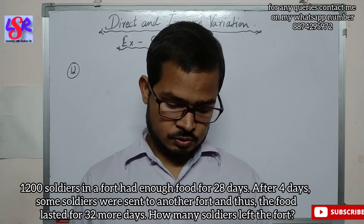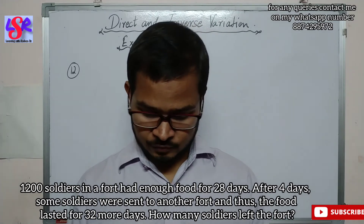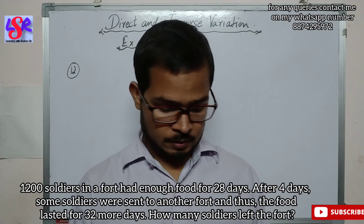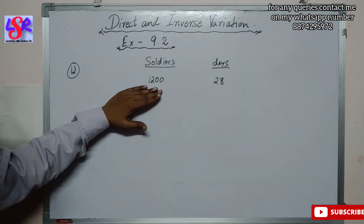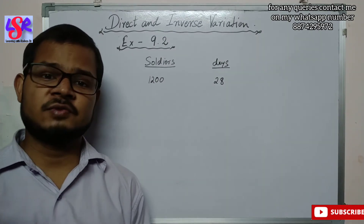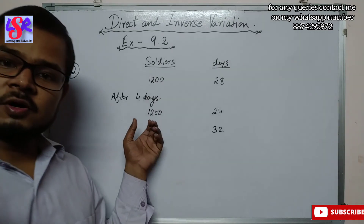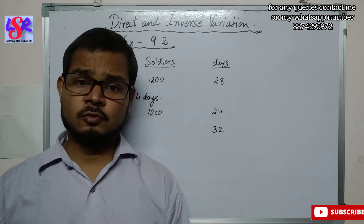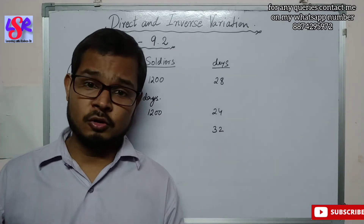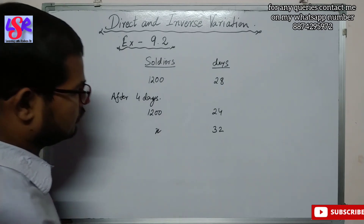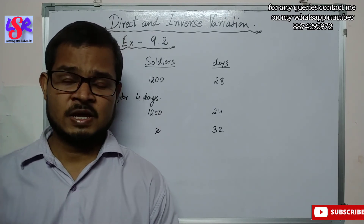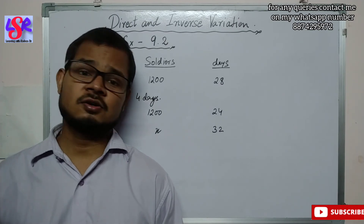Now question number 12: 1200 soldiers in a fort have enough food for 28 days. After four days, some soldiers were sent to another fort, and the food lasted for 32 more days. Find the number of soldiers left in the fort. After 4 days, if all 1200 soldiers remained, the food would last 24 more days (28 − 4 = 24). But since soldiers were shifted, it now lasts 32 more days. Fewer soldiers means more days — inverse variation.